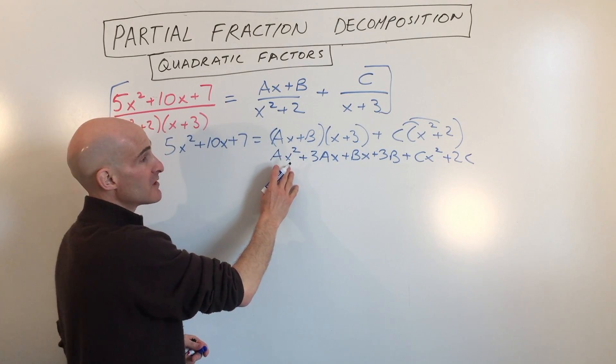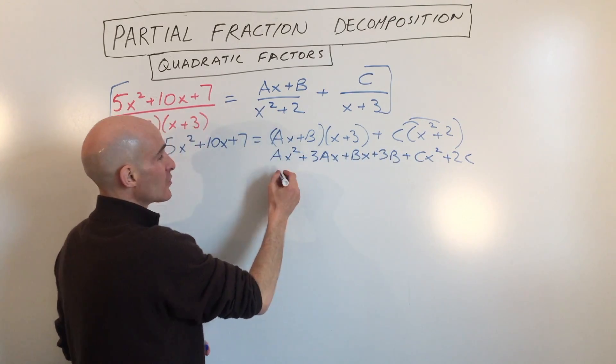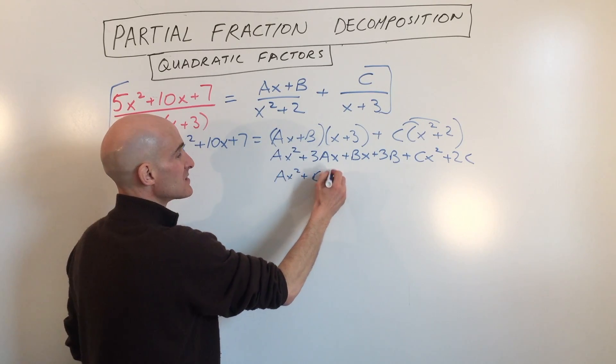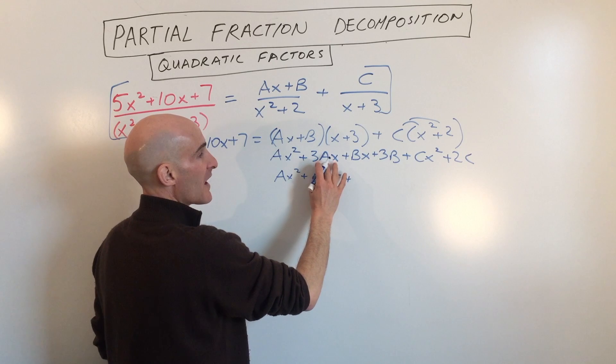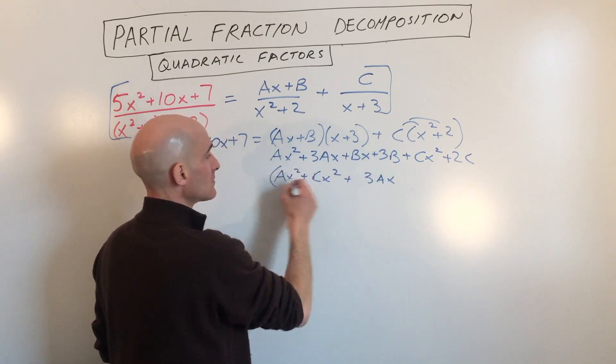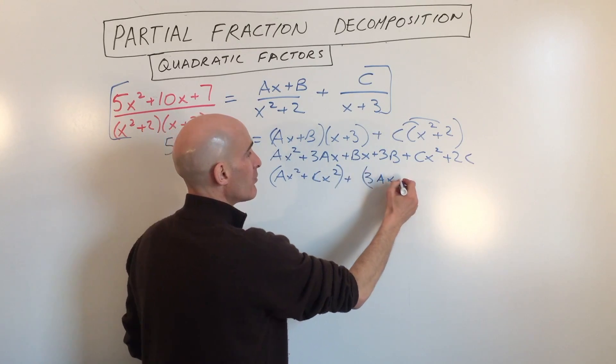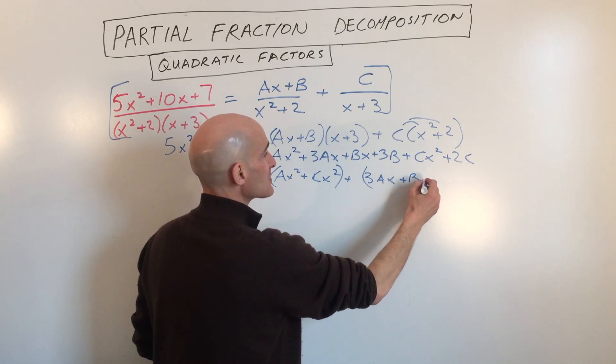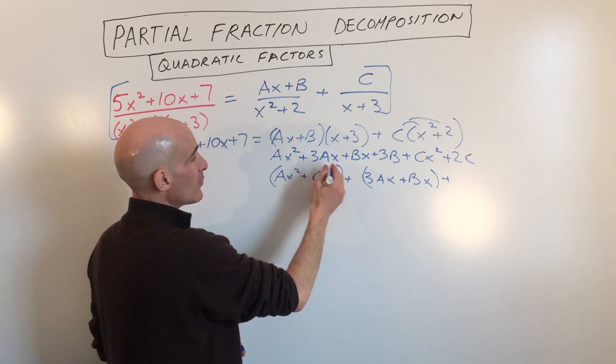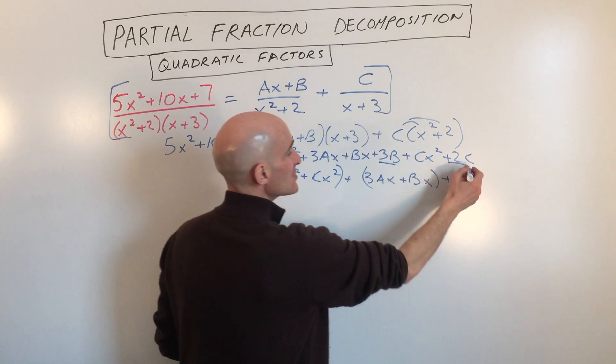We get cx squared plus 2c. Now what I want to do is I want to group together the x squared terms. So we have ax squared plus cx squared. I'm going to group the x terms together. So we have 3ax plus bx.